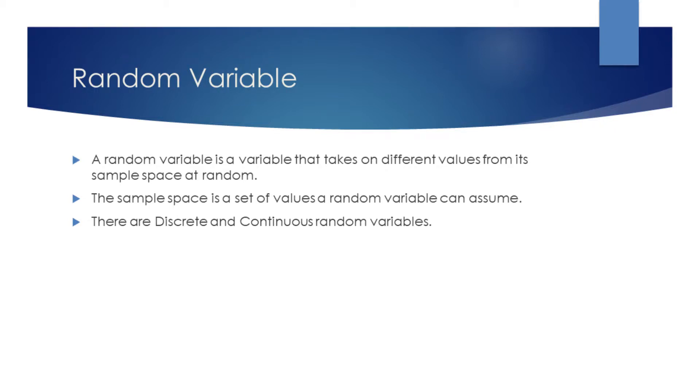A random variable is a variable that takes on different values from its sample space at random. The sample space is a set of values a random variable can assume.